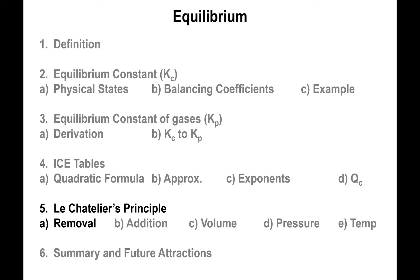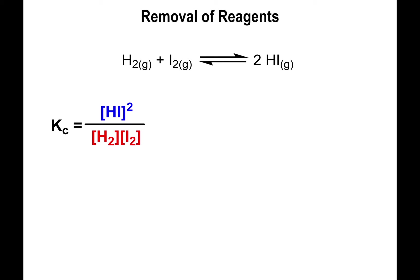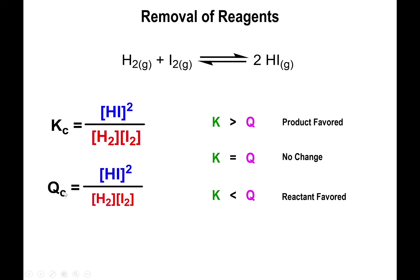Let's look at removal first. Consider H₂ + I₂ turning into 2HI, with the equilibrium expression HI² over H₂ times I₂. If you remove reactants, the denominator becomes smaller than it should be for equilibrium. Making the denominator smaller makes the overall fraction larger. So the value of Q ends up being larger than K. This tells you that removing reactants causes the reaction to shift to the reactant side.